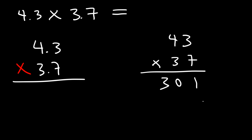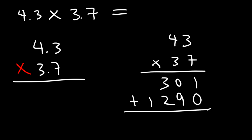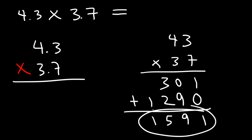To move on to the next row, you need to add a 0. And then 3 times 3 is 9. After that, we have 3 times 4, which is 12. And then we need to add. So 1 plus 0 is 1. 0 plus 9 is 9. 3 plus 2 is 5. And then bring down the 1. So this is 1,591.